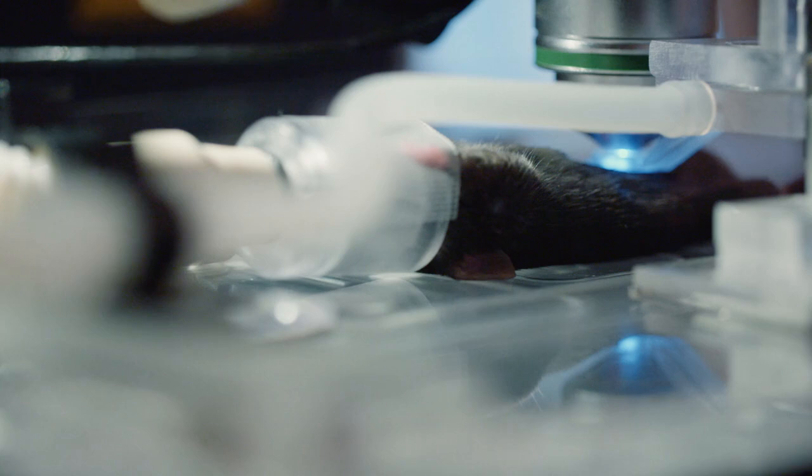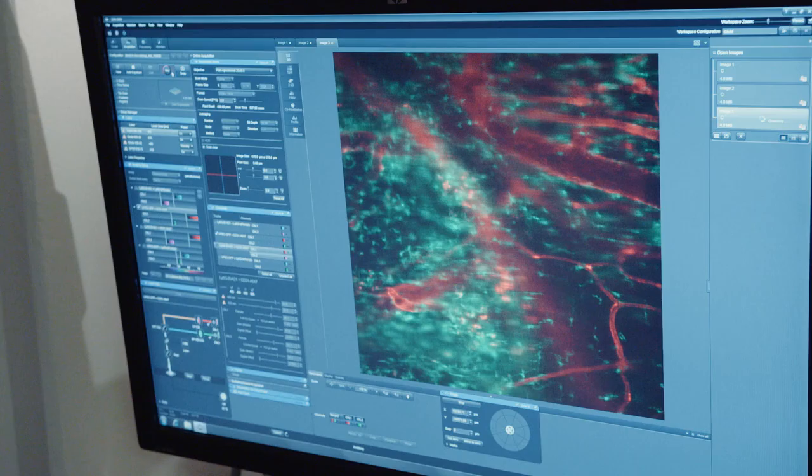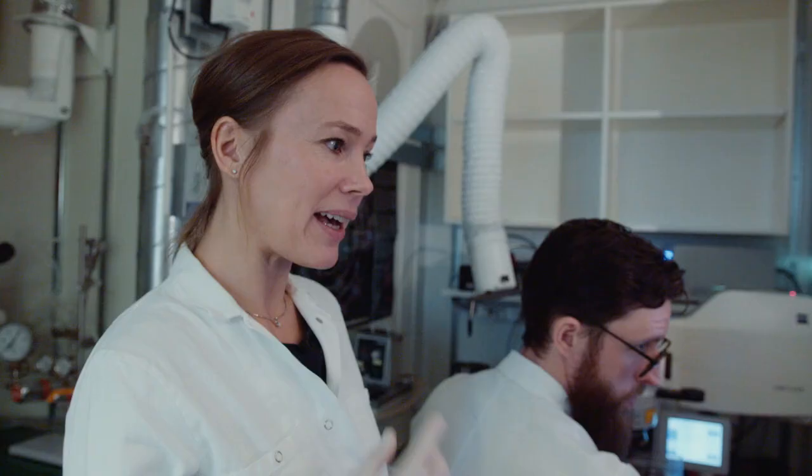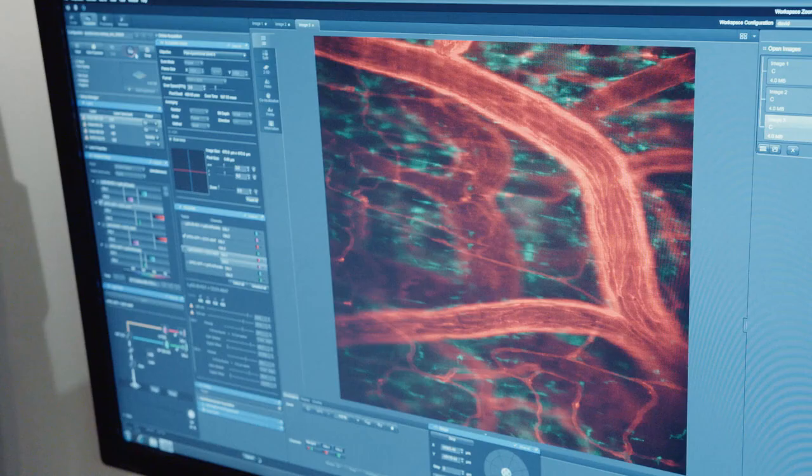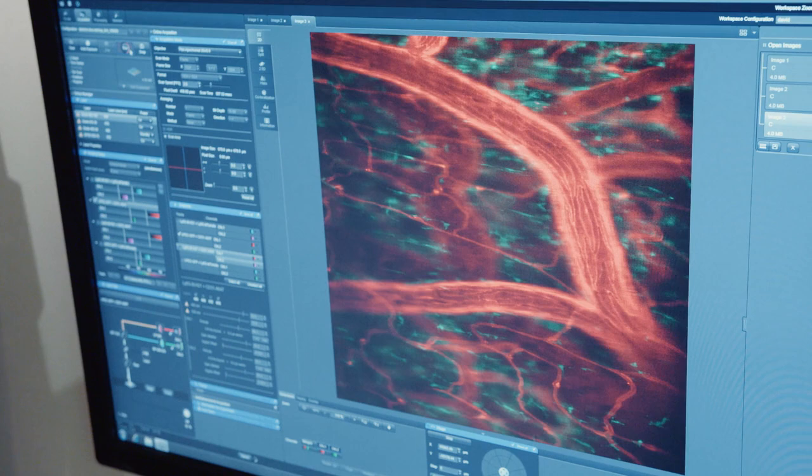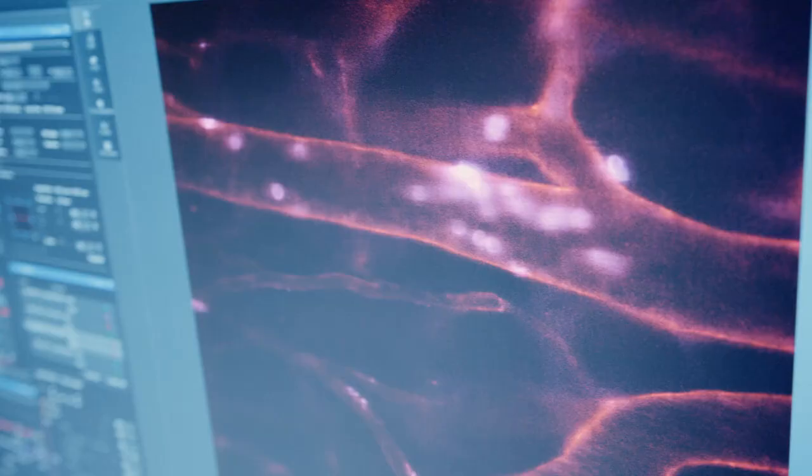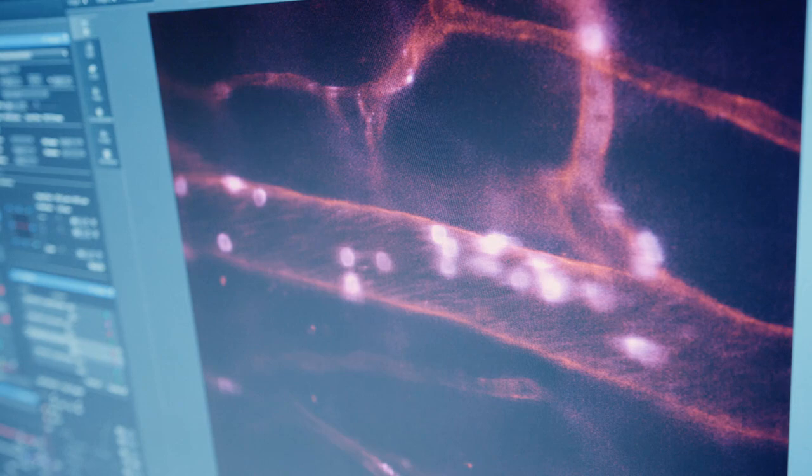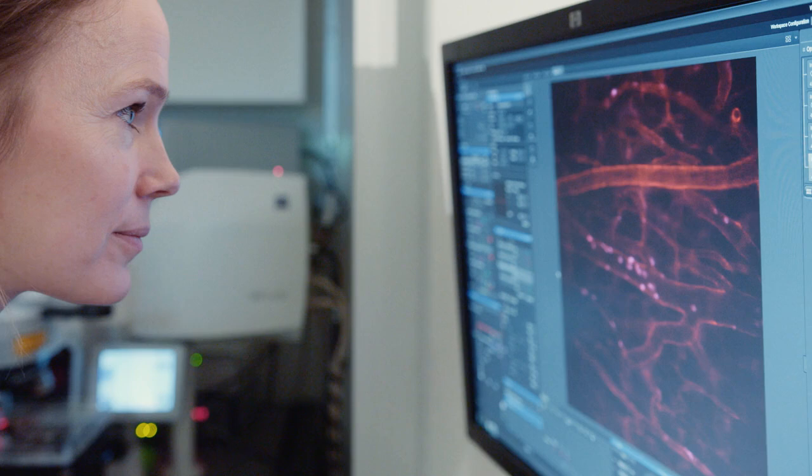So the reason for the image to move is that the mouse is breathing all the time and has also a heartbeat. And now we are looking at the intestine. The red staining shows the blood vessels, and the pink staining marks an immune cell that circulates.